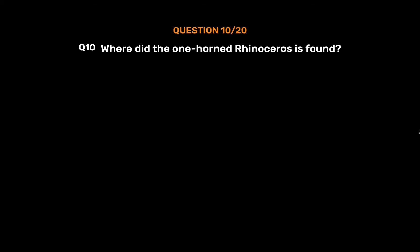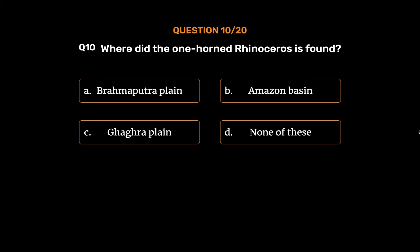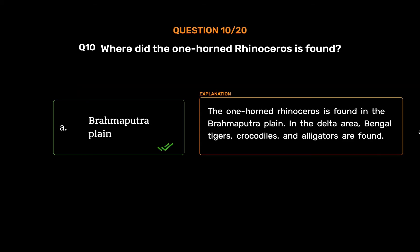Question number 10. Where is the one-horned rhinoceros found? Option A: Brahmaputra plain. Option B: Amazon basin. Option C: Ghagara plain. Option D: None of these. The correct answer is Option A, Brahmaputra plain. The one-horned rhinoceros is found in the Brahmaputra plain. In the delta area, Bengal tigers, crocodiles, and alligators are found.